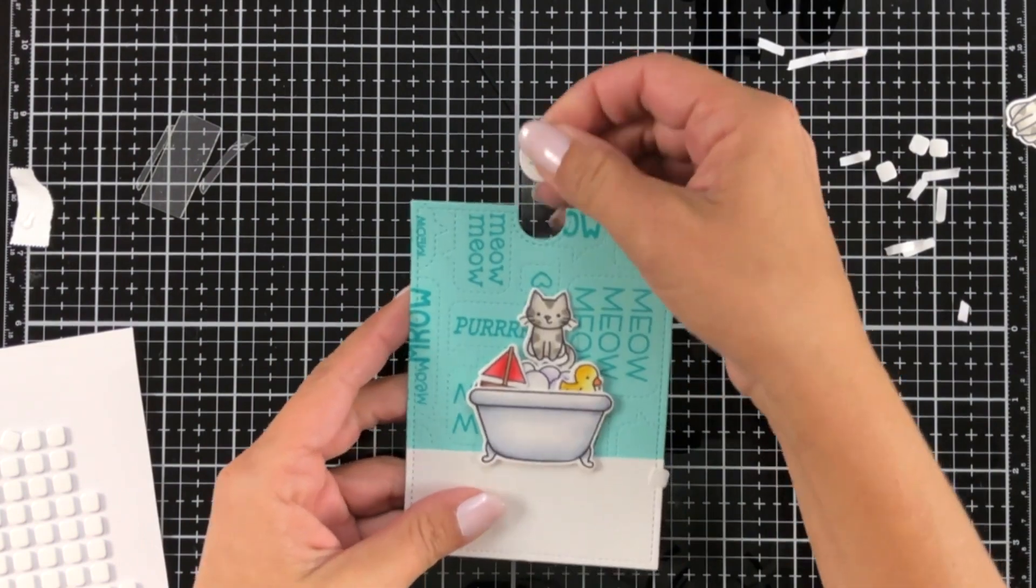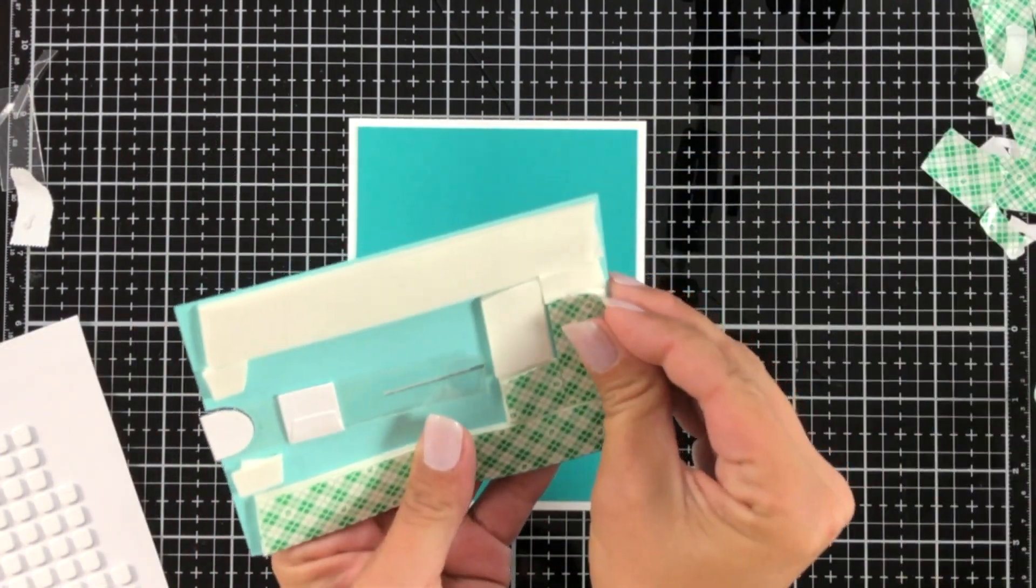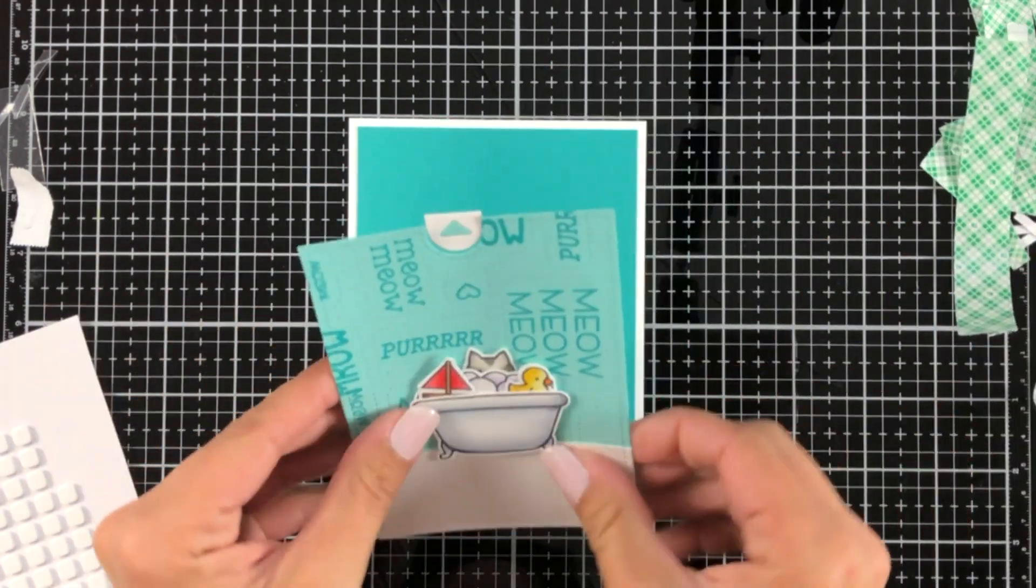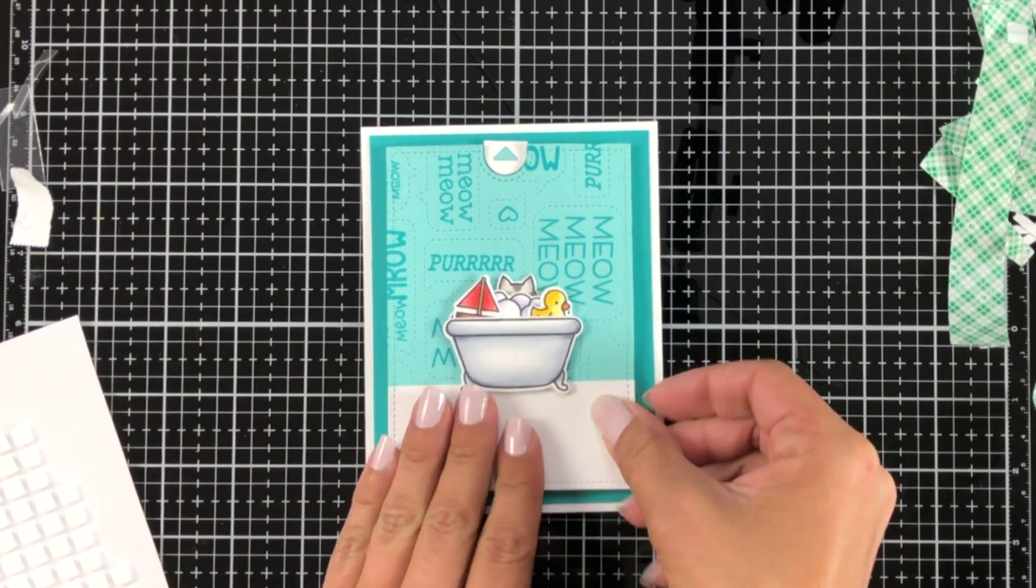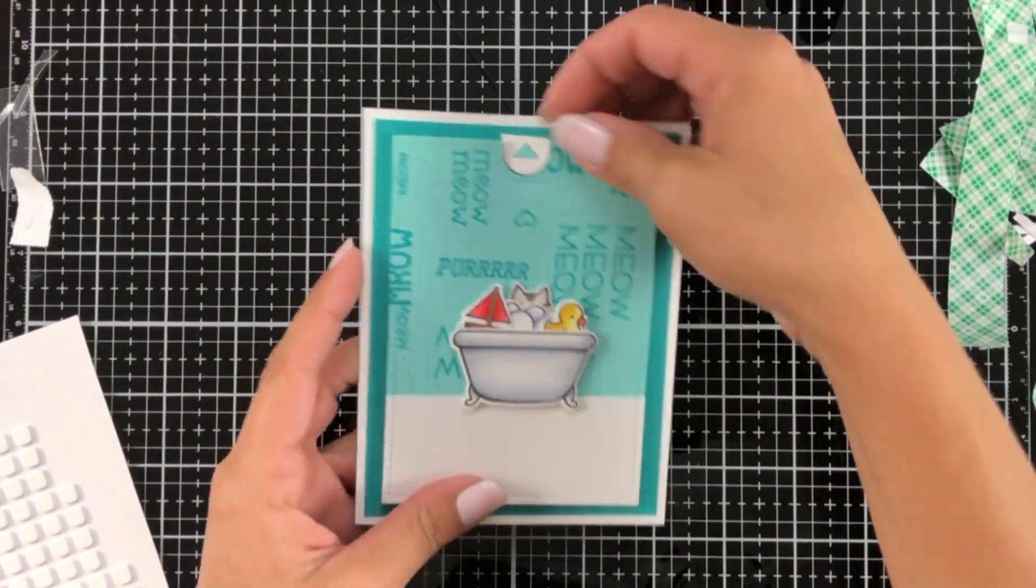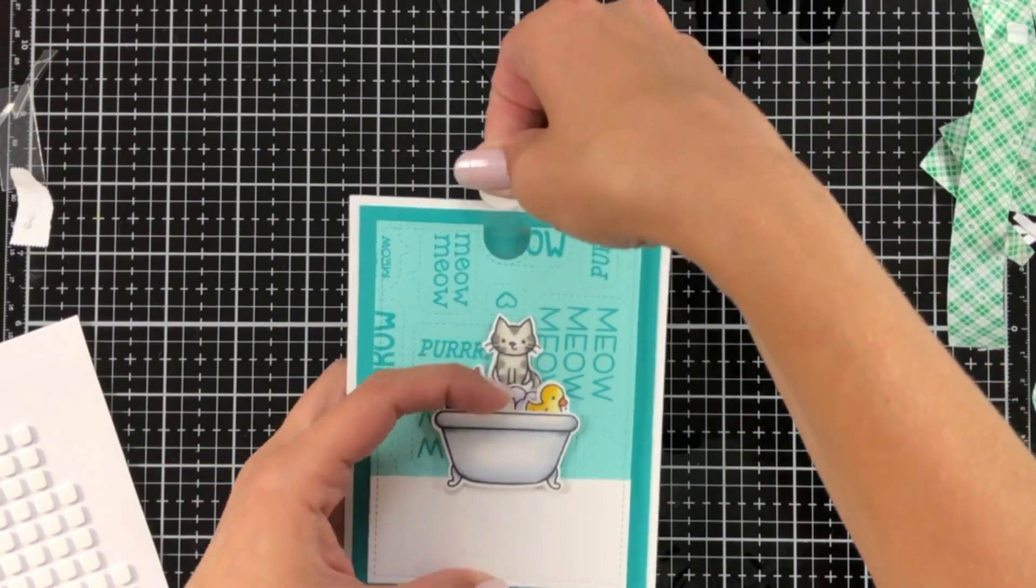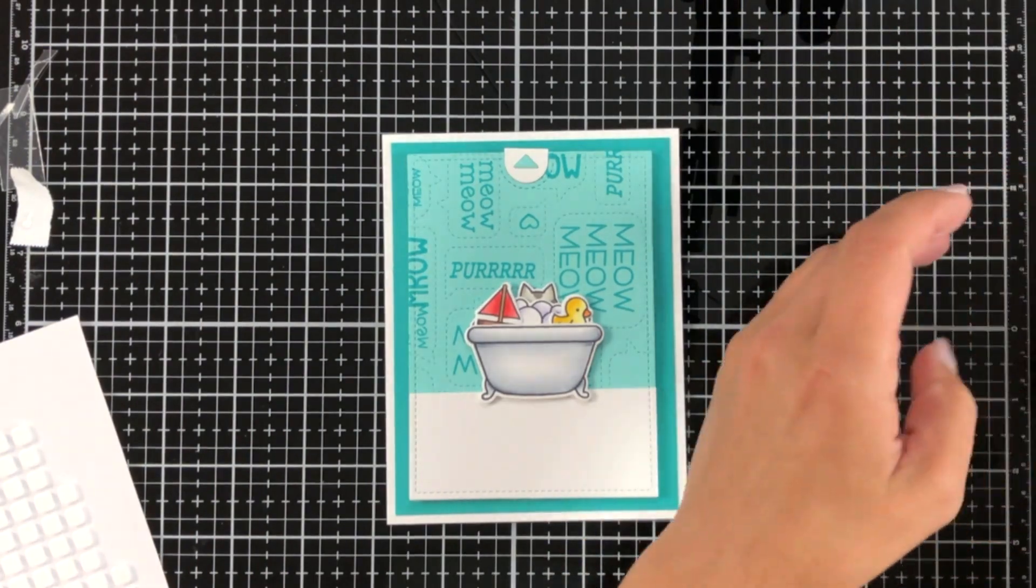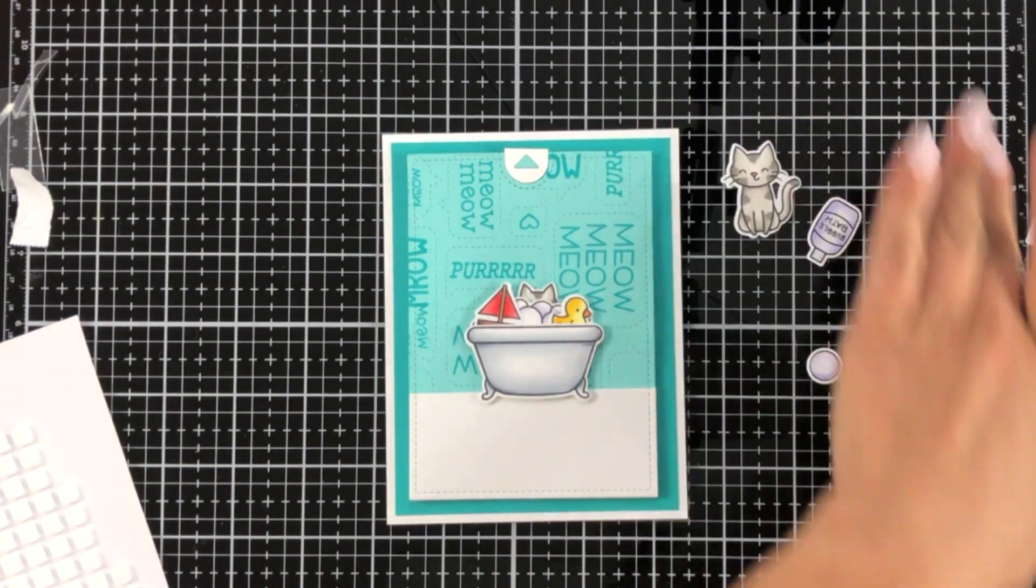Now, to make sure I'm giving this enough room for the interactive piece to move, I did layer this twice with foam tape. I'm going to attach that to a card base that I made. I have white as my main card base, which is 4.25 by 5.5, and then I have a piece of peacock cardstock cut to 4 by 5.25. This gave my interactive piece enough room to move up and down and be able to get my fingers in there to pull that up.